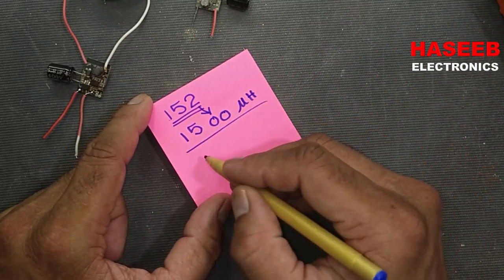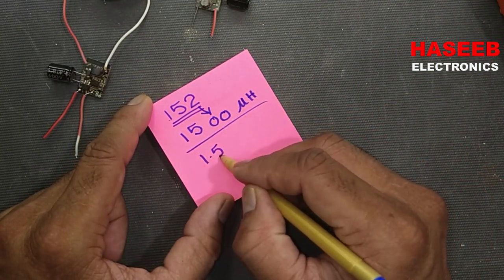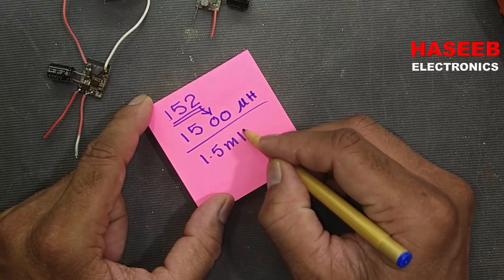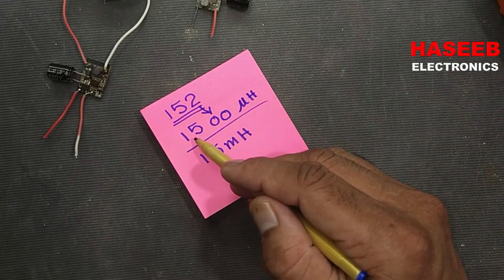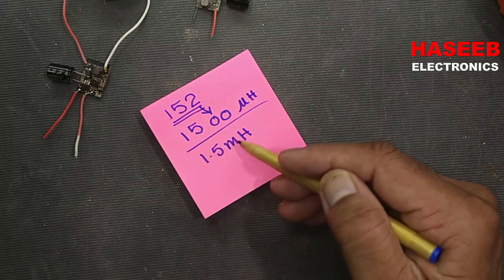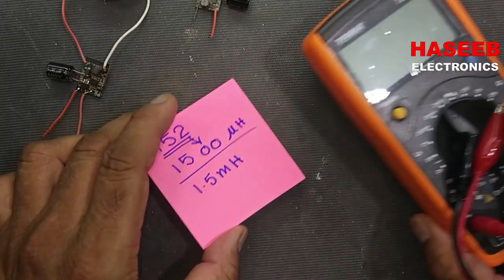So we can write it as 1.5 millihenry. Why? Divided by one thousand to convert microhenry to millihenry.